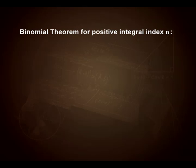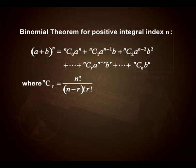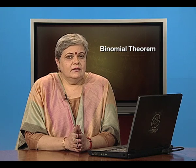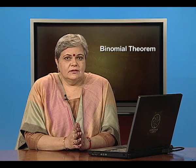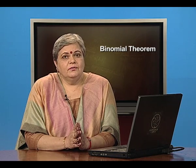Binomial theorem for positive integral index n suggests that (a + b)^n equals nC0·a^n + nC1·a^(n−1)·b + nC2·a^(n−2)·b² and so on up to nCr·a^(n−r)·b^r, continuing till the last term nCn·b^n, where nCr is n! divided by (n−r)!·r!. We understood in the last lesson that if the index is n there are n+1 terms in the expansion. The general term nCr·a^(n−r)·b^r is in the position of r+1.